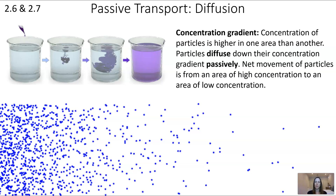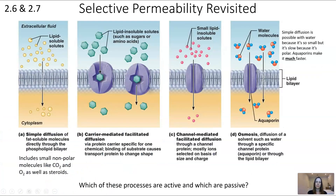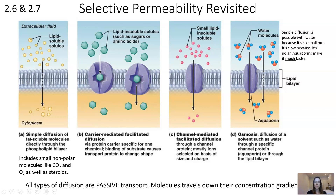Molecules naturally go from high concentration to low concentration. Looking at this diagram from a different perspective — now considering active versus passive transport — all four types shown are passive. They're all moving molecules from an area of high concentration to low concentration, which happens naturally without needing any energy input.